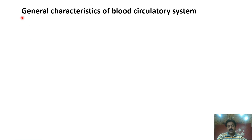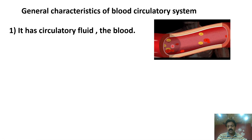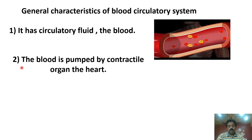Today we will study the General Characteristics of the Blood Circulatory System. First: a circulatory fluid known as blood. The circulatory system has a circulatory fluid which we know as blood. Blood circulates through tubes, and these tubes are called blood vessels. Second: the blood is pumped by a contractile organ known as the heart.